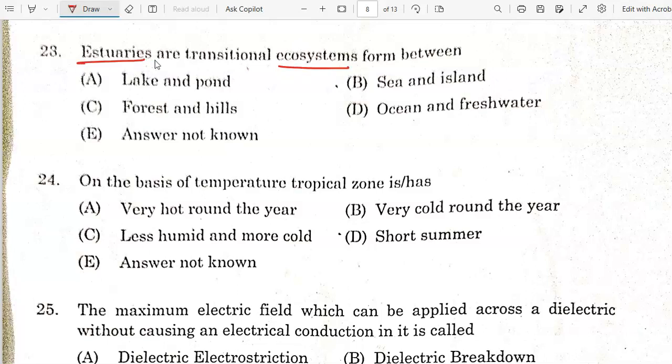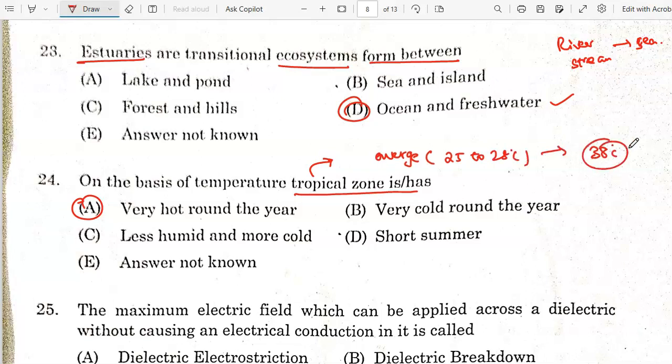Estuaries are transitional ecosystems. They form between fresh water and ocean salt water where river streams open to sea. Option D is the correct answer. On the basis of temperature, tropical zone has very hot air. The average temperature is 25 to 28 degrees Celsius. Highest temperature up to 30 degrees Celsius. This zone has more exposure to sun, so option A is the correct answer.